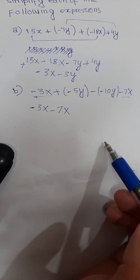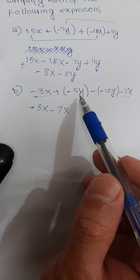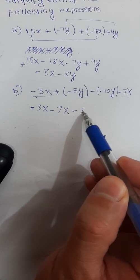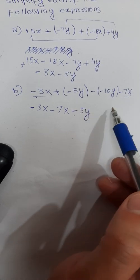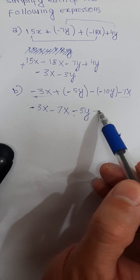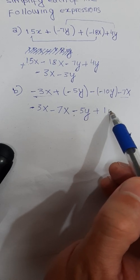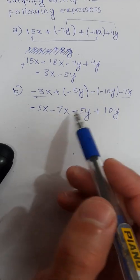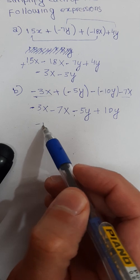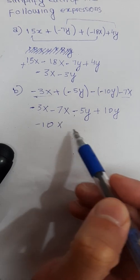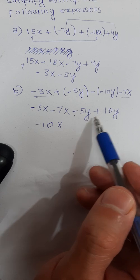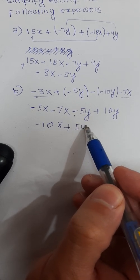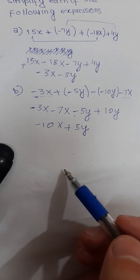Now write down the terms involving y: minus 5y, and minus into minus gives plus 10y. So minus 3x minus 7x is minus 10x, and minus 5y plus 10y is plus 5y. This is the solution for part b.